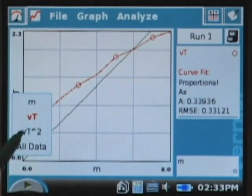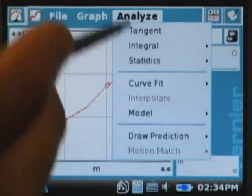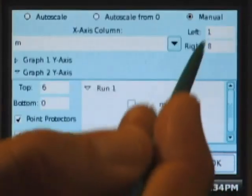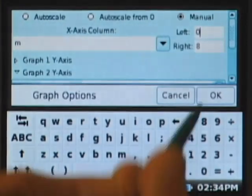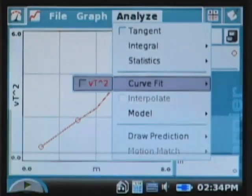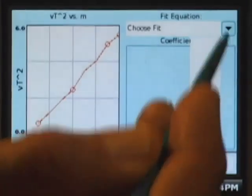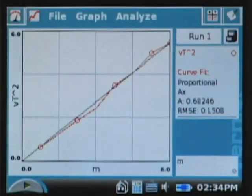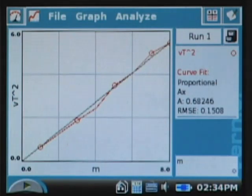Now, let me swap over to the square of the terminal velocity. Once again, I'm going to change the graph range to include the origin. And let's do a curve fit. Again, I'm going to use the proportional model. And this time, I get a pretty good fit for the square of the terminal velocity versus mass. This tells me that the model with the drag force being proportional to the square of the velocity is much closer to reality than a model with the drag force being merely linear with velocity.